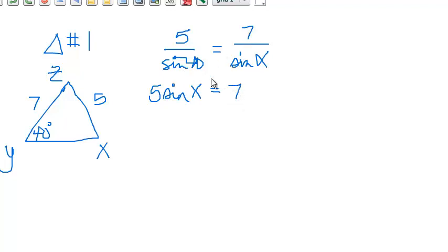Same thing here. 7 times sine of 40°. Put the 7 in front. Otherwise, it ends up sine of 280°, and that's not good. Okay? 7 times the sine of 40°. We're trying to find x. I need to get rid of the 5. Divide both sides by 5. Sine of x equals.